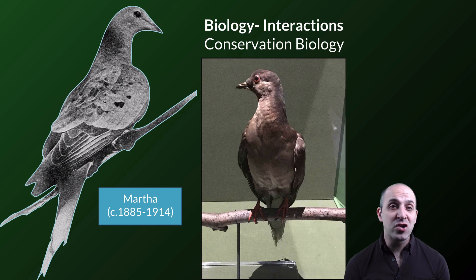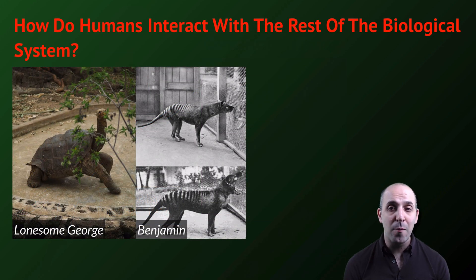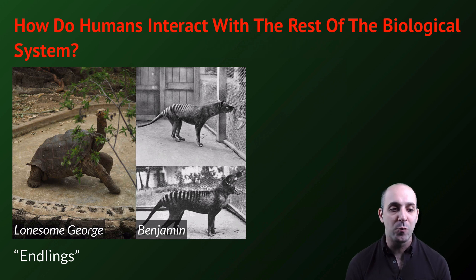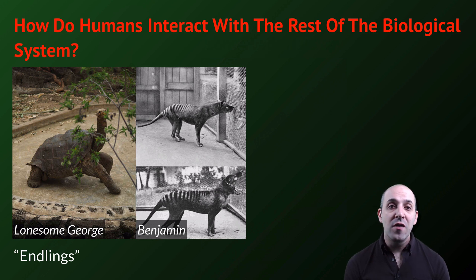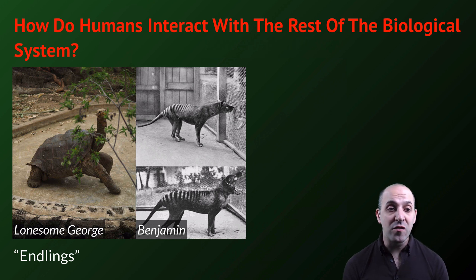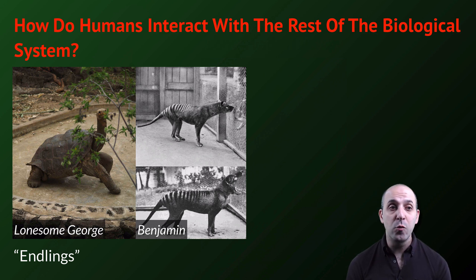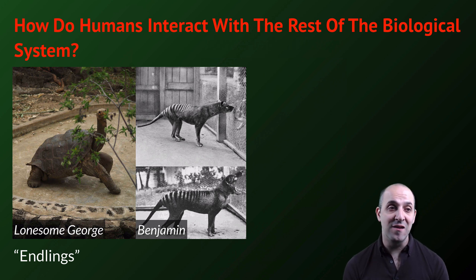The Passenger Pigeon is by no means alone in this. There are many different endlings that we have known throughout human history — the last member of a species, like Benjamin, the last Tasmanian tiger ever known, or Lonesome George, the last member of his particular population of Galapagos tortoises. In almost every case, the populations were driven to extinction through the actions of humans.